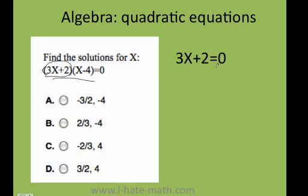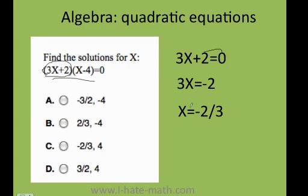Let's do it. 3x plus 2 equals 0. I pass the 2 to the other side and I get negative 2. Then I solve for x and I get that x equals negative 2 divided by 3.